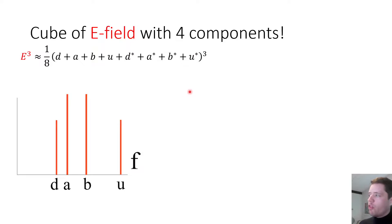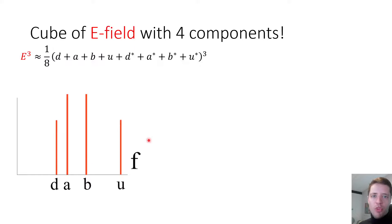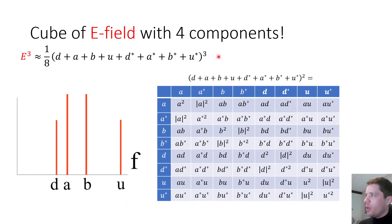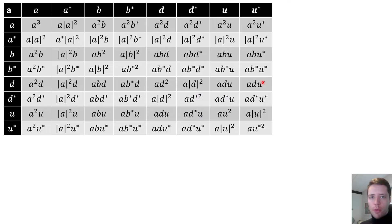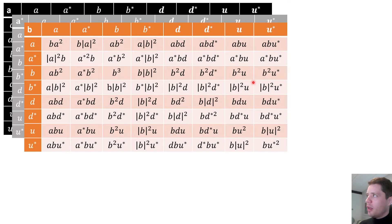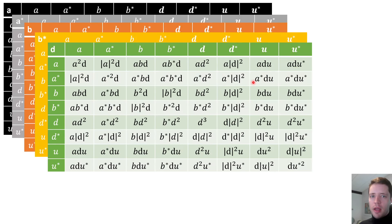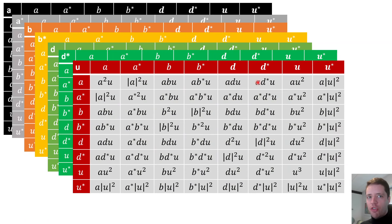To model four-wave mixing, we assume four frequencies are present: D (down from A), A, B, and U (up from B). To compute the cube of the E field from this expression, we first compute the square, yielding a large table of entries, and then multiply the entire table by each of the individual terms and sum all results. The resulting tables for A, A*, B, B*, D, D*, U, and U* are quite extensive.